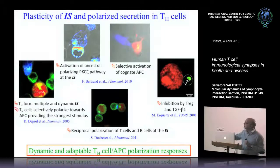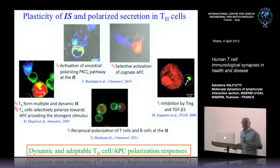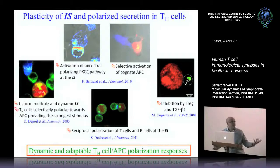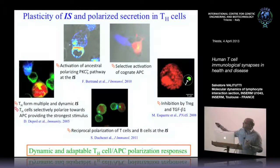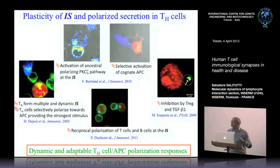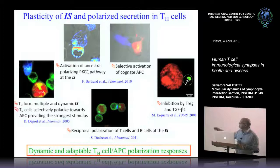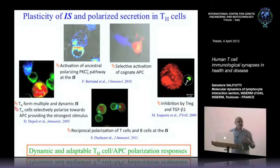Another student, Michael Escheri, showed that TREG cells, which are known to inhibit different aspects of the adaptive immune response, have developed a mechanism to inhibit this rapid and dedicated polarization of helper T-cells towards APCs via a mechanism requiring the secretion of TGF-beta.